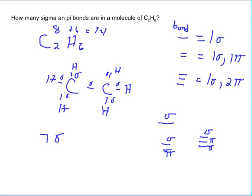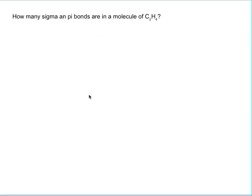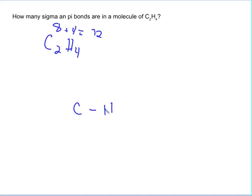Let's go to one where they're not all single bonds. So, C2H4. We need to draw the Lewis structure. We count up the valence electrons: eight plus four equals 12. So we connect everything with a single bond.